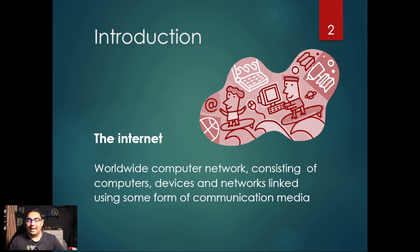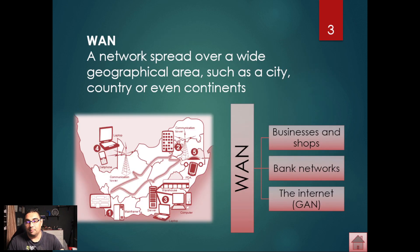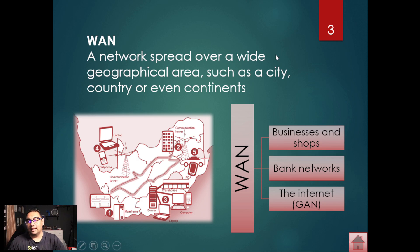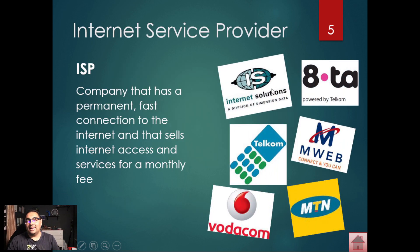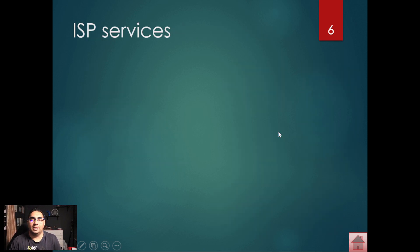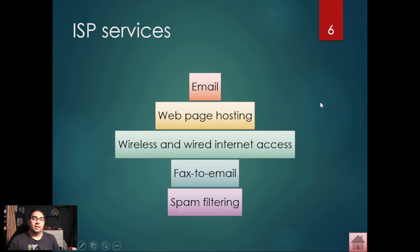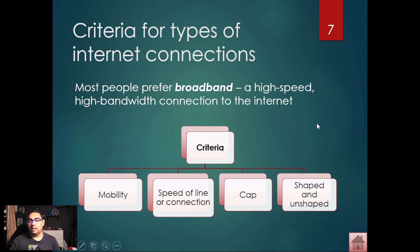So far in Term 2 we looked at what the internet is — by now we should know that definition. We also looked at our wide area network, which is a network that spans many geographical areas. We also covered internet connections, things like what an ISP is, so you must be able to tell me what an ISP is, give an example, and explain some of the services they provide.